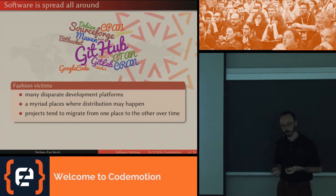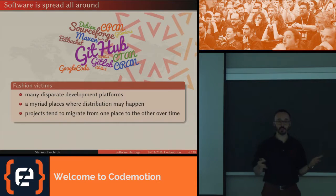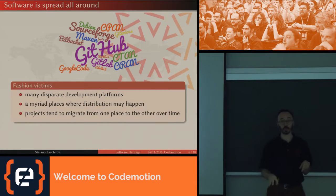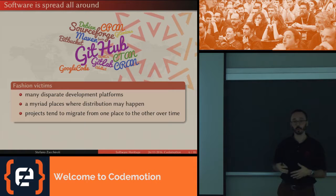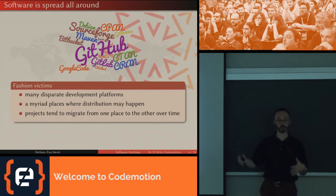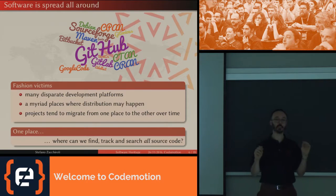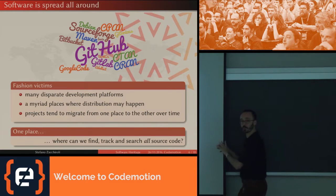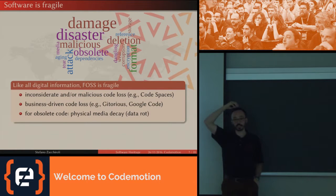But where is this big software commons? If you want to have a look at it, where do you go? Well, things start getting complicated because it's very much scattered around. Today we have GitHub, which is possibly the largest code hosting platform that humanity has ever built, and a lot of code is available there. But you also have a lot of code on other platforms, and you don't have a single place where you can go and find if a given line of code is available in the software commons.